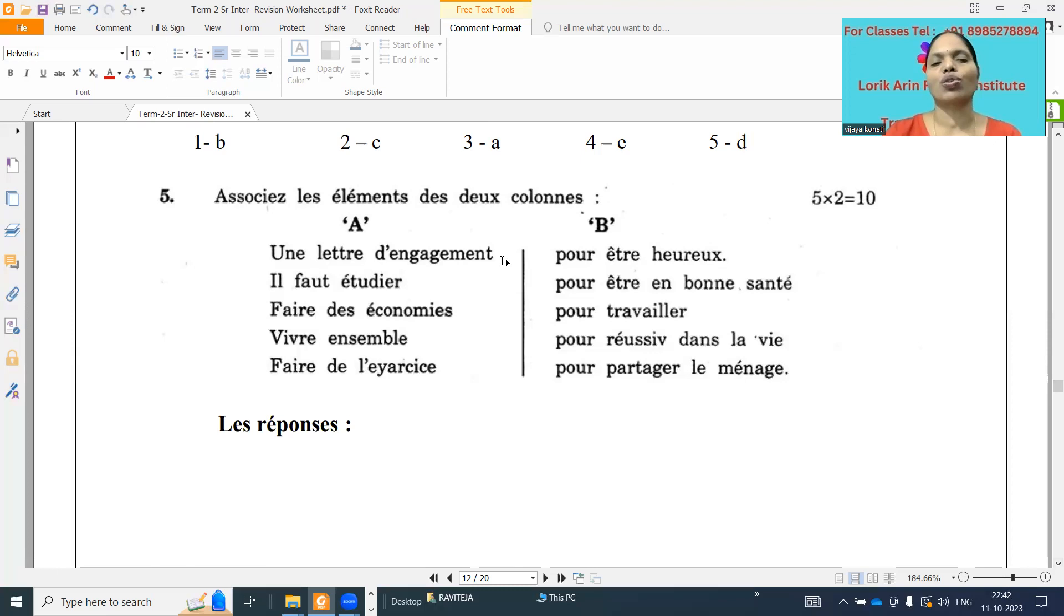And next one it is, associez les éléments des deux colonnes. So match the elements of the two columns. Une lettre d'engagement. What it will be? An appointment letter. Il faut étudier. It is necessary to study. And faire des économies. For to do savings. And vivre ensemble. To live together. And faire de l'exercice. Actually here it is a spelling mistake. Faire de l'exercice. To do exercise.